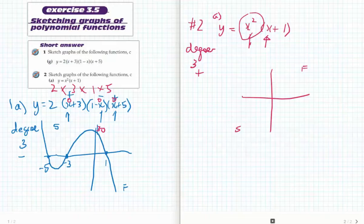It has two x-intercepts. At x equals 0, because it's to the power of 2, it's going to touch. At x equals negative 1, it's going to cut. So we're going to start here and cut through, come back, touch, and go back up and finish off through there.